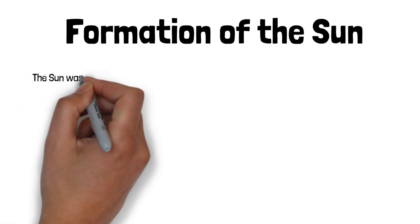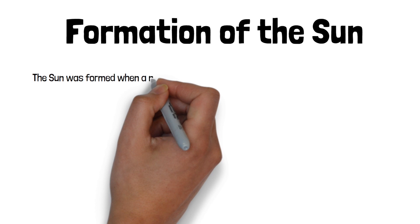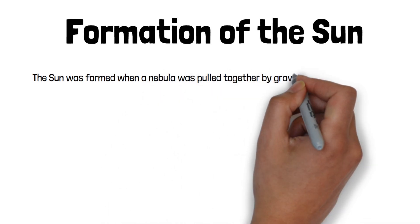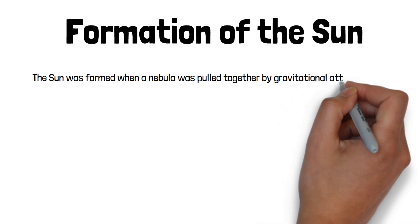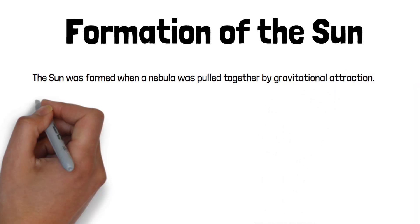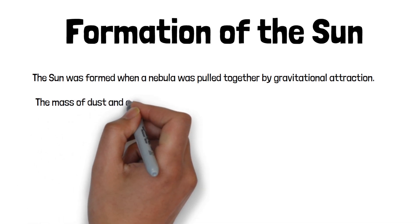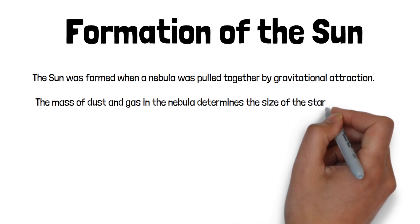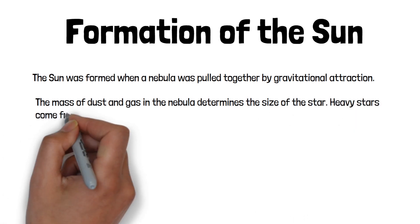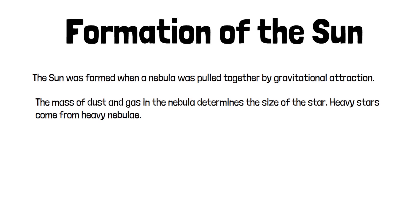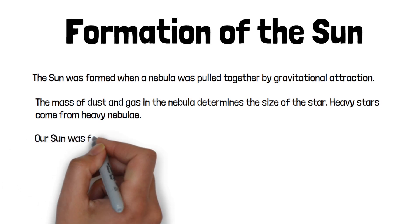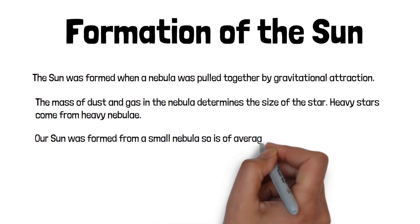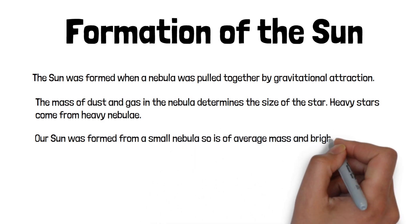So what are our key learning points about the formation of the sun? Well the first thing that we need to know is the sun was formed when nebula was pulled together by gravitational attraction. We also need to know that the mass of dust and gas in the nebula determines the size of the star. So if you have heavy stars they would have been formed from heavy nebulae. Our sun was formed from a small nebula. And so what this actually means is that it is of average mass and brightness.